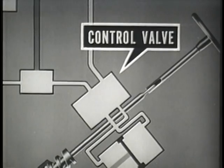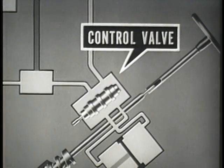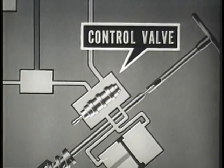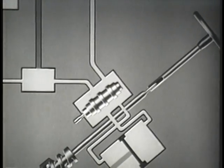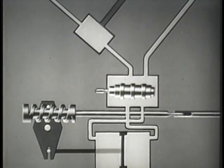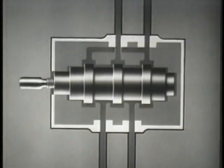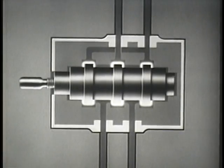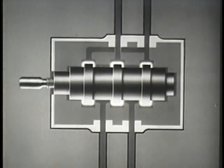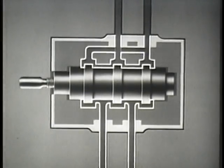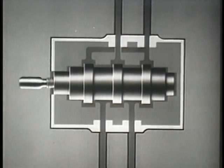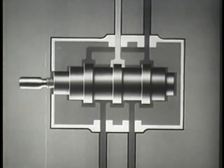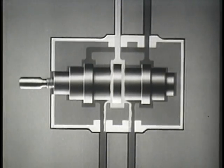The control valve is the heart of the hydraulic steering system. The control valve has a spool which directs and controls the flow of fluid to the power cylinder. The spool has lands which control the flow of fluid through the passageways to the power cylinder. The fluid enters the control valve through the inlet port and flows around the spool in channels leading to the power cylinder.